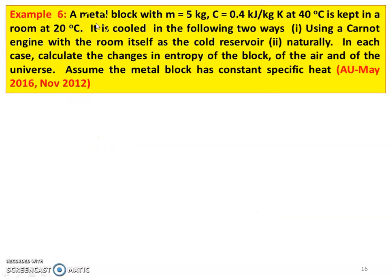Example number 6. A metal block with M = 5 kg, C = 0.4 kJ per kg Kelvin, at 40 degree Celsius is kept in a room at 20 degree Celsius. It is cooled in the following two ways: one, using a Carnot engine with the room itself as the cold reservoir; and two, naturally. In each case, calculate the change in entropy of the block, entropy of the air, and entropy of the universe. Assume the metal block has constant specific heat.